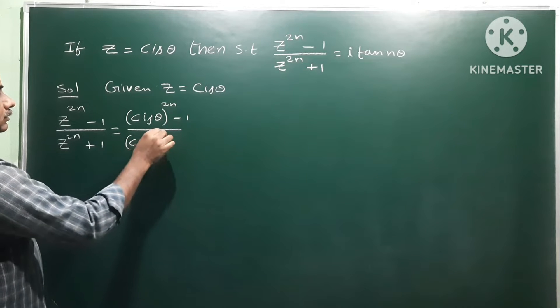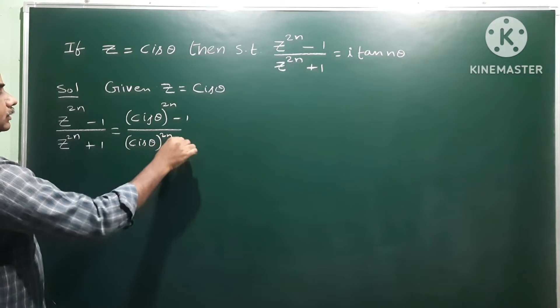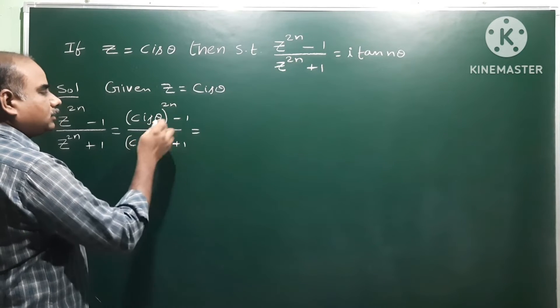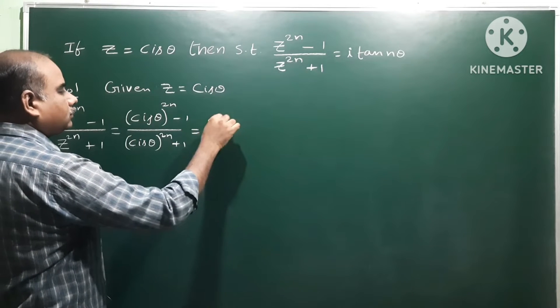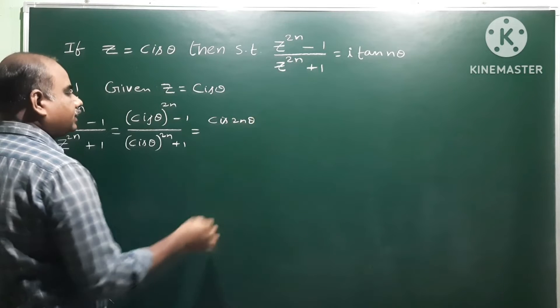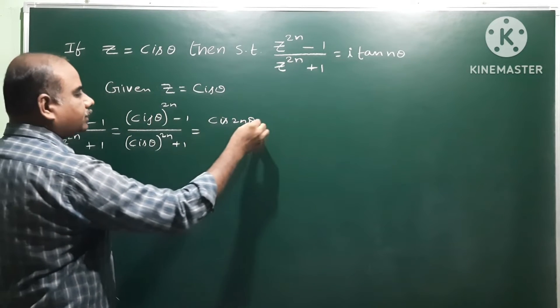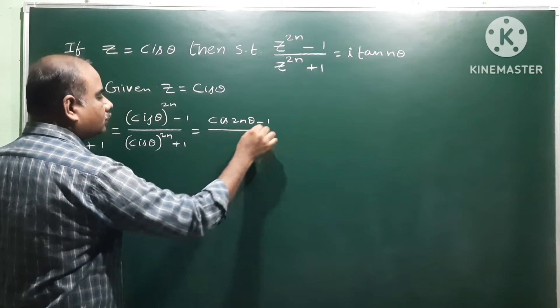cis θ whole power 2n plus 1. So DeMoivre's theorem applies here. cis θ whole power 2n becomes cis 2nθ minus 1 by